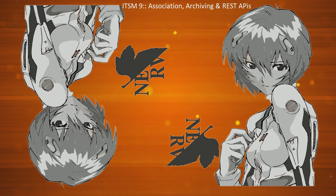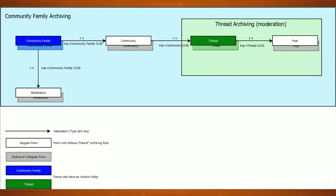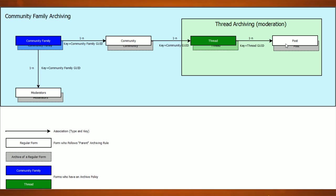So let's start with the business case. I will be trying to replicate the BMC community architecture in ITSM, in ARS. That means I've got several forms - regular forms. So for example a community family, then a community, then a thread and post. A community family could be BMC Atrium. A community inside BMC Atrium could be ARSystem, CMDB, ADDM. A thread is a discussion in a BMC community - a thread can belong to ARSystem for example. And posts of course belong to a thread.